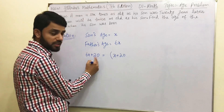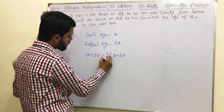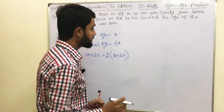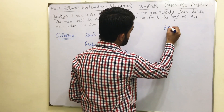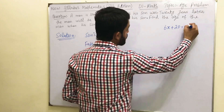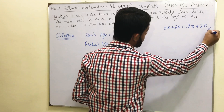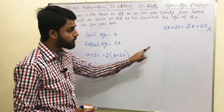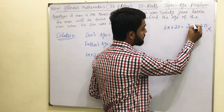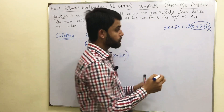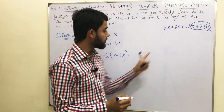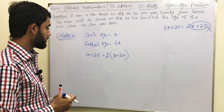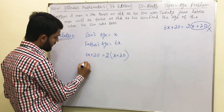This means that after 20 years the age of the man is going to be 2 times the son's age. Now, one common mistake many students make is writing 6x + 20 = 2 × x + 20, which is completely wrong. You need to multiply 2 with the whole age — because 20 years later x + 20 is the full age of the son. So the correct equation is 6x + 20 = 2(x + 20).